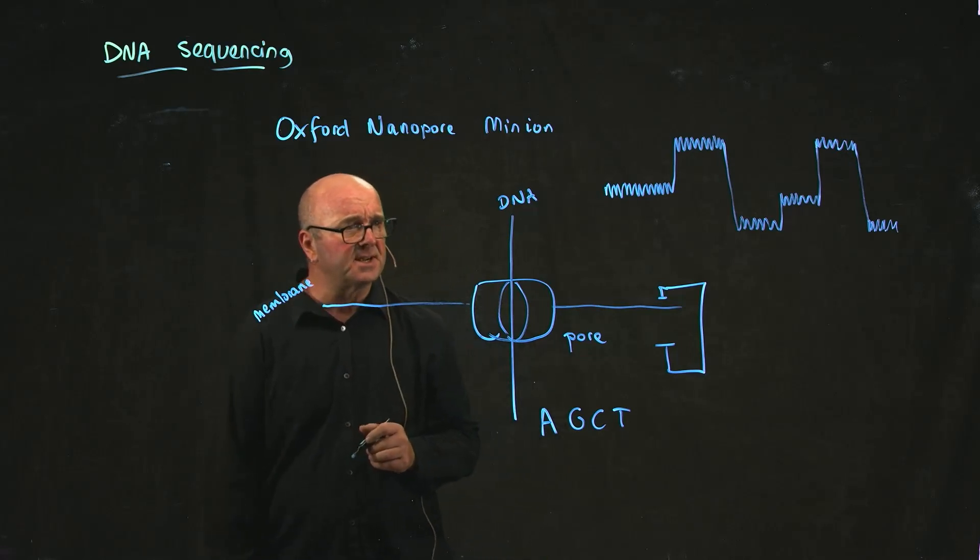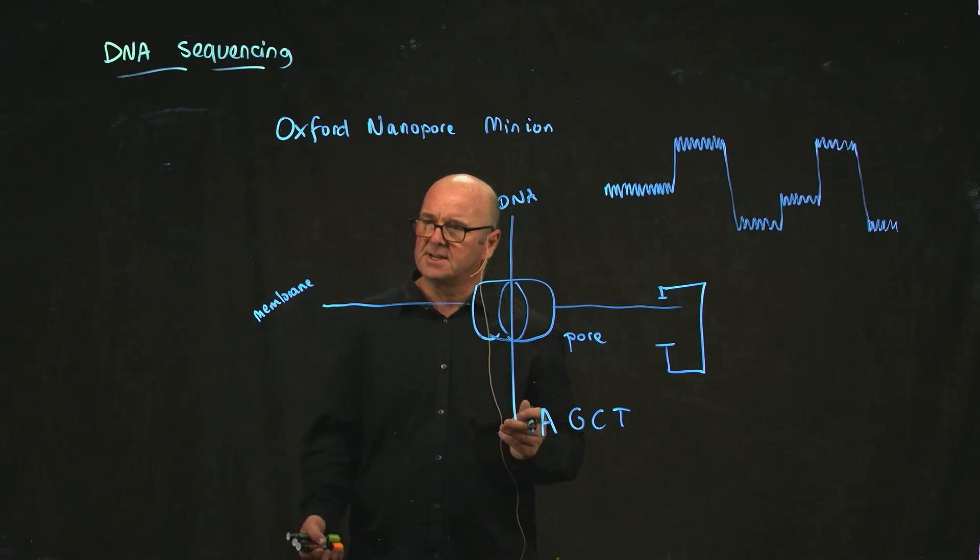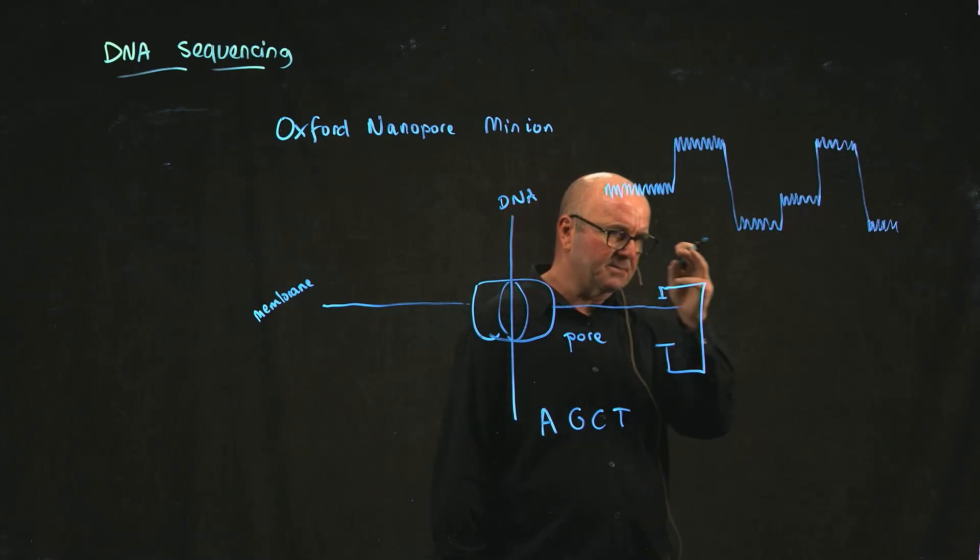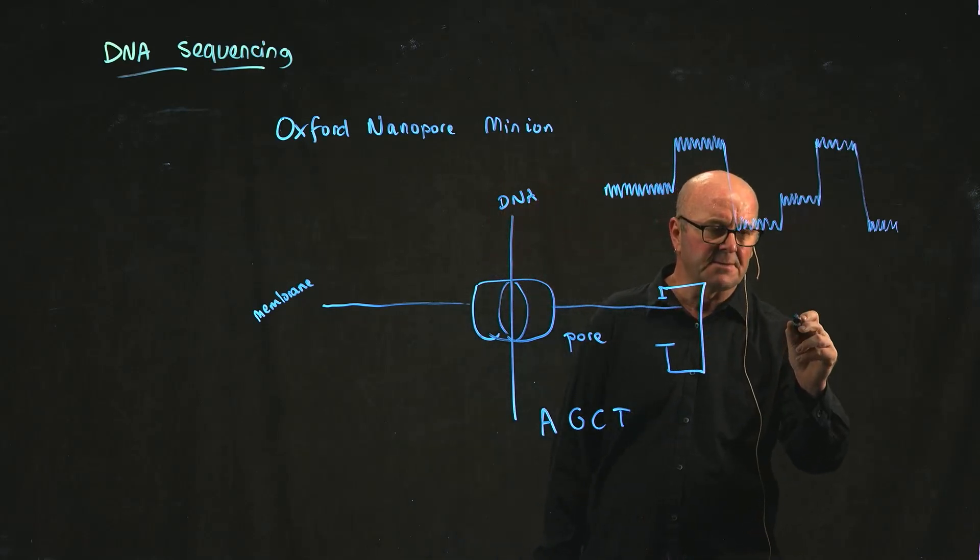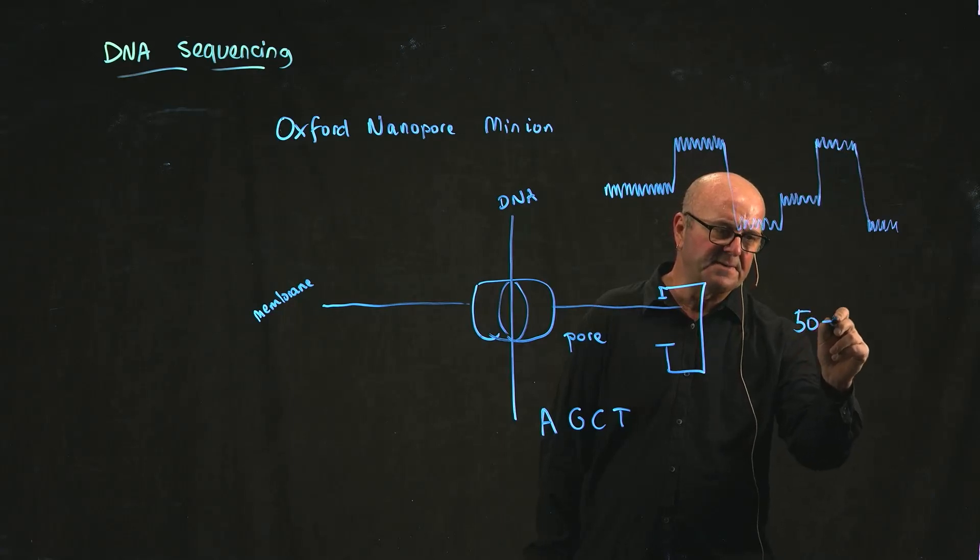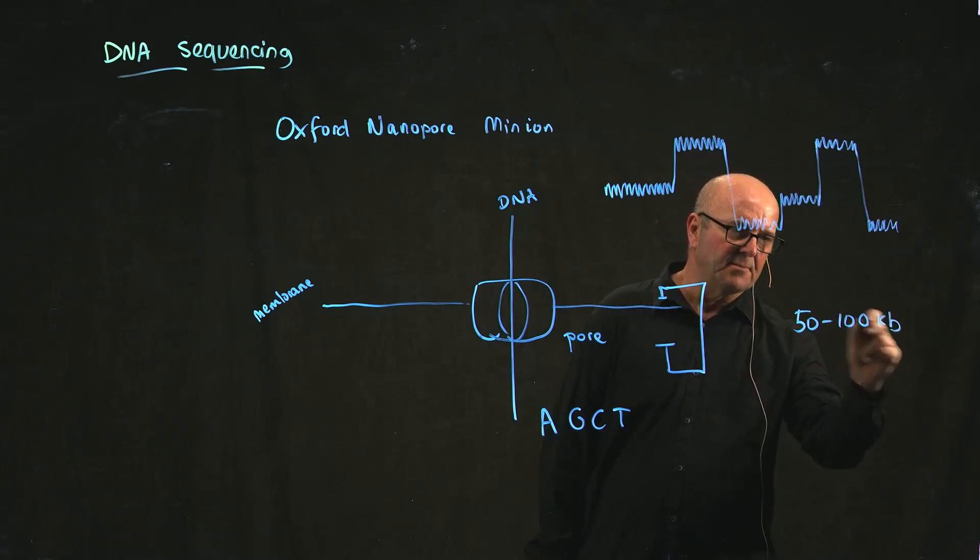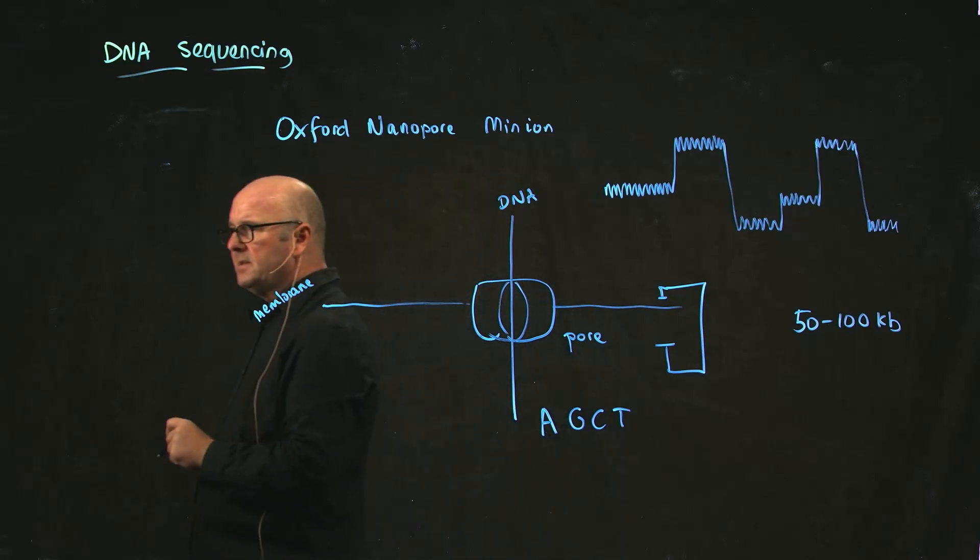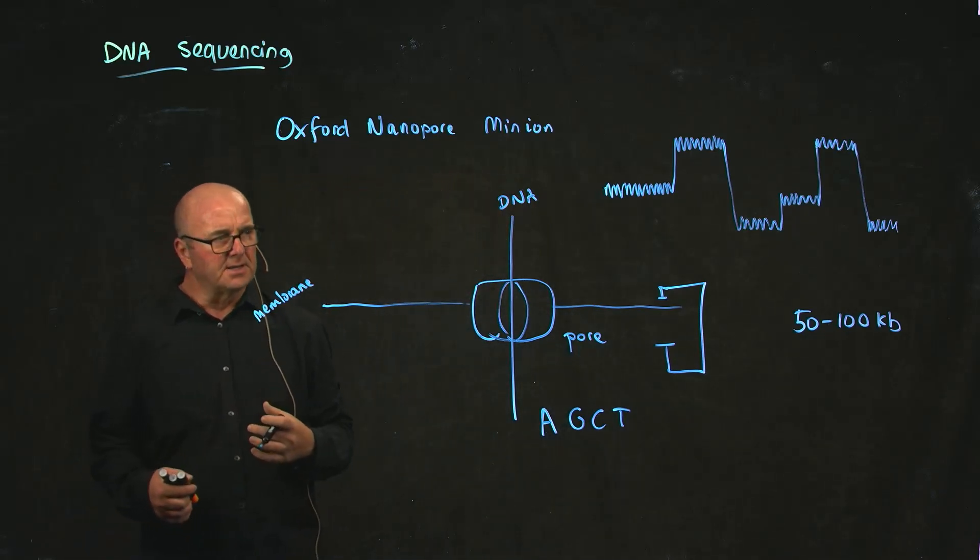The advantage of nanopore sequencing is you can get really long reads. I did a bunch of nanopore sequencing over the summer and got reads up to in the range of 50 to 100 kilobases - really long reads.